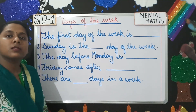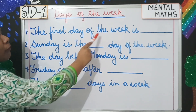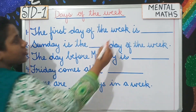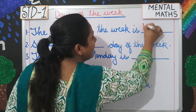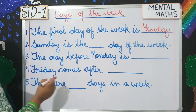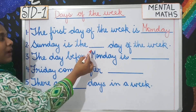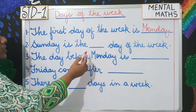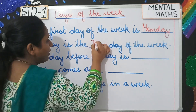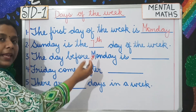Now let us see some questions. Question number one: the first day of the week is? Which is the first day students? Monday. So you will write here Monday. Next, question number two: Sunday is the dash day of the week. You have to write the position of Sunday. Sunday is the seventh day. You will write the ordinal number — seventh, 7th.